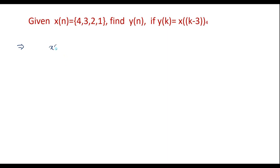We know that x of n is {4, 3, 2, 1}. So x of 0 is 4, x of 1 is 3, x of 2 is 2, and x of 3 is 1.